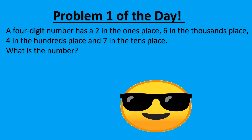So we're going to have to arrange these numbers in the correct order. We will begin by putting the two in the ones place, then the six in the thousands place, four in the hundreds place, and seven in the tens place. So what is our number? Six thousand four hundred seventy-two.